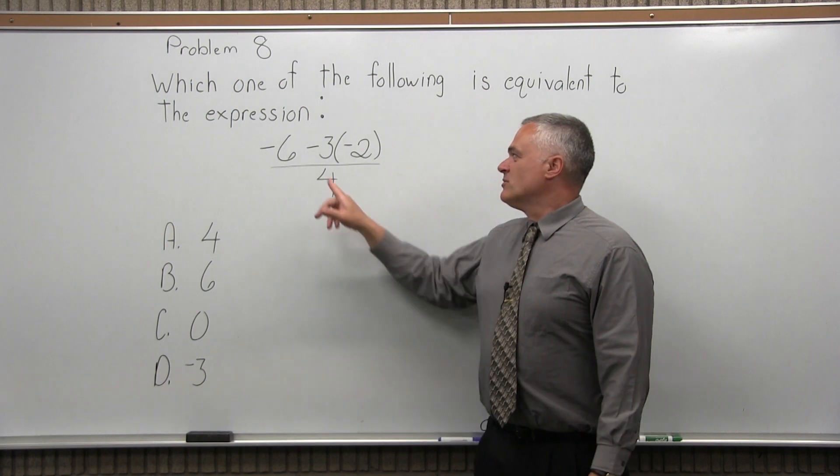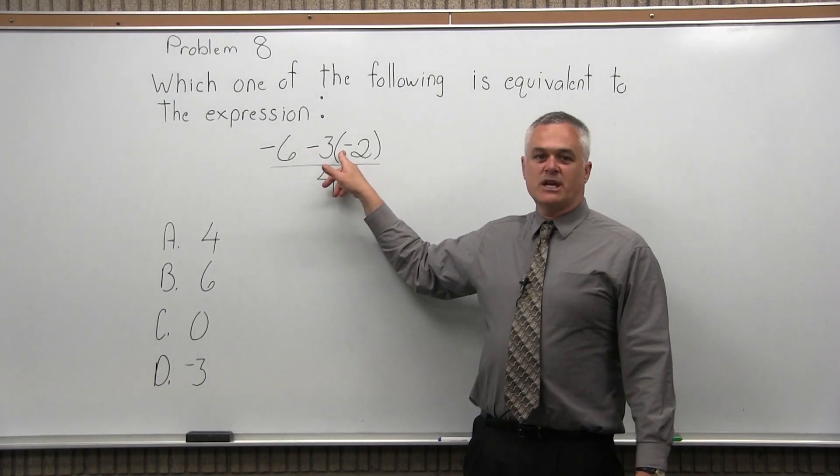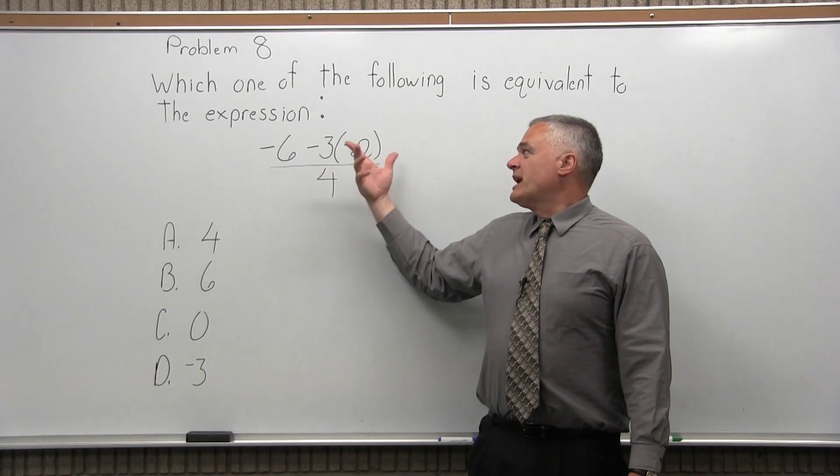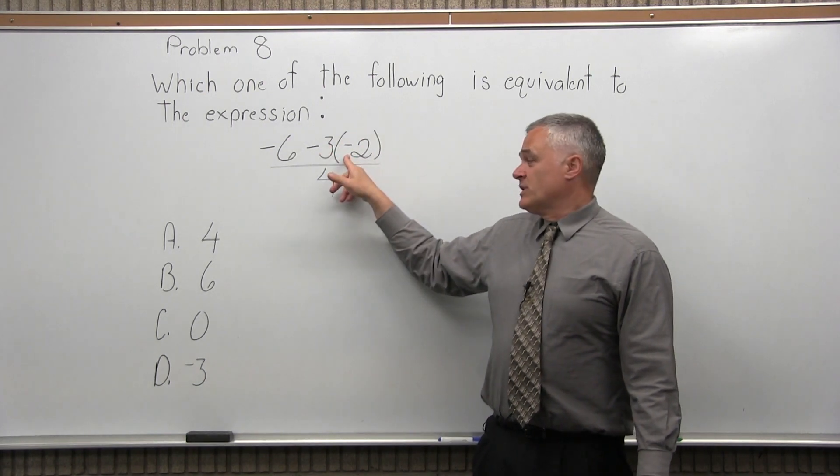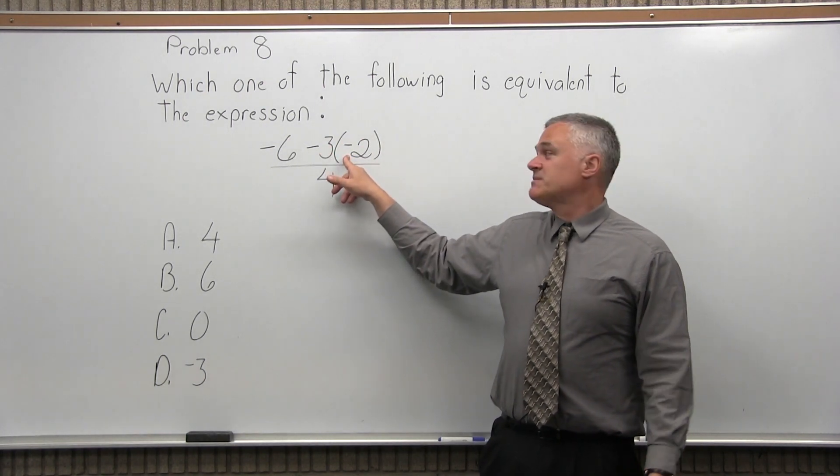Now even there, there's two things going on in the numerator. There's the subtraction and the multiplication. So with that, which one happens first? You have to do the multiplication first. Even though it's not written first, it must be done first.